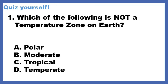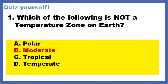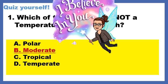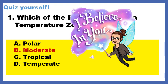Hey guys, I am Miss Sostowski's nephew, and you probably know me from some of her science videos. But today I'm going to read you the quiz question: Which of the following is not a temperature zone on Earth? A. Polar. B. Moderate. C. Tropical. D. Temperate. 5, 4, 3, 2, 1. We're going to get rid of some answers. We're going to get rid of A. Polar and C. Tropical. The right answer is Moderate — that is not a temperature zone. Goodbye. I believe in you guys.